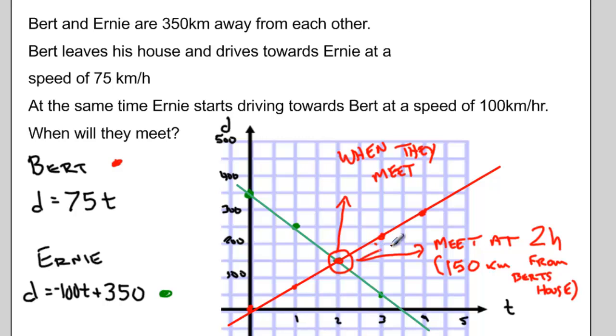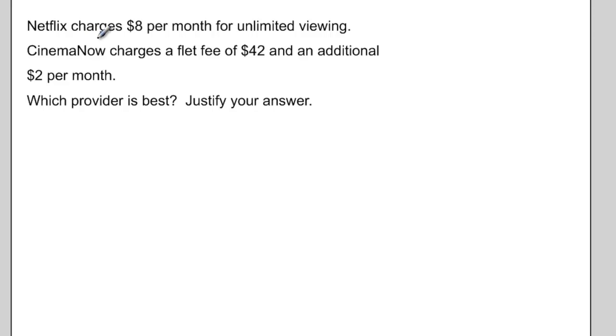Or even better, they meet at the point (2, 150). Let's try another problem. Netflix charges $8 per month for unlimited viewing. CinemaNow charges a flat fee of $42 and an additional $2 per month. Which provider is best? Can we justify our answer?